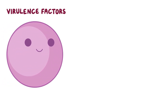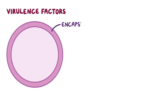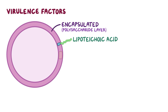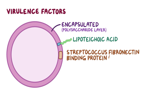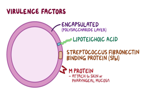Strep pyogenes has a number of virulence factors that help it attack and destroy host cells and evade the immune system. First, strep pyogenes is encapsulated, meaning it's covered by a polysaccharide layer called a capsule. On the capsule there are adherence proteins like lipoteichoic acid, streptococcus fibronectin binding protein (SFBL), and M protein, which help strep pyogenes attach to host cells like those in the skin or the pharyngeal mucosa.